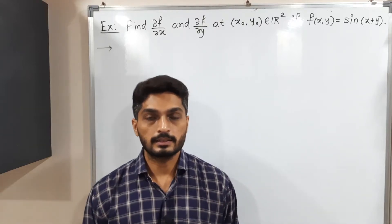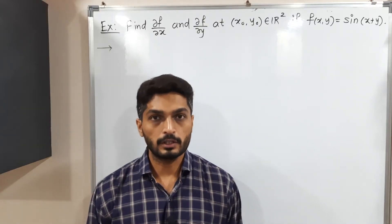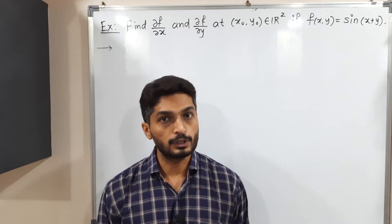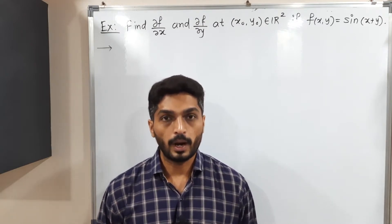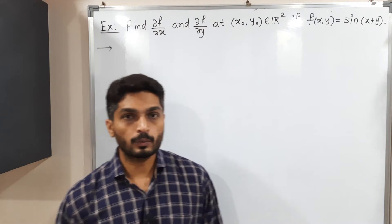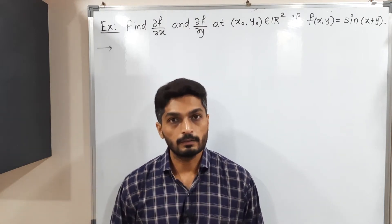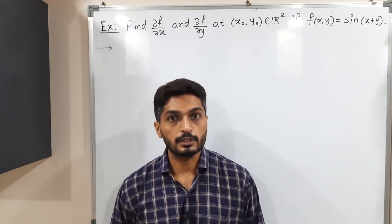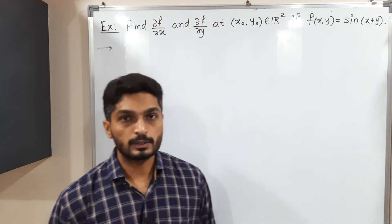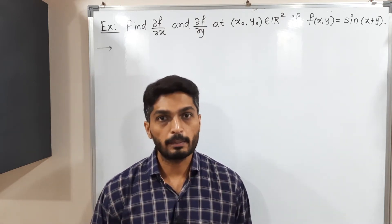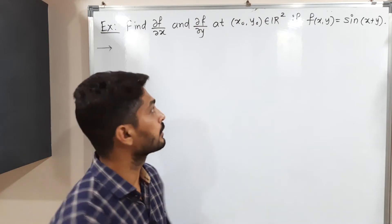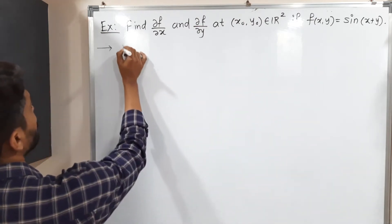Let us discuss this example of partial derivatives. Here we have to find two partial derivatives: with respect to X and with respect to Y, at a general point (x₀, y₀). The function is f(x,y) = sin(x + y). Let us find ∂f/∂x at point (x₀, y₀), and I will use the definition to find it.